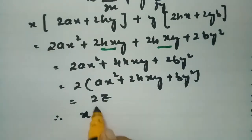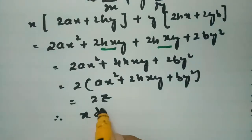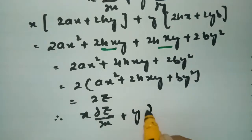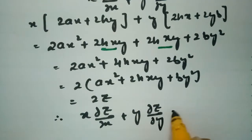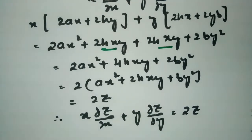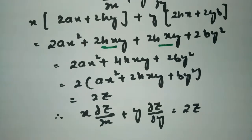Therefore x into ∂z/∂x plus y into ∂z/∂y equals 2z. Hence Euler's theorem is verified for solution 1.